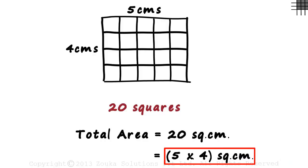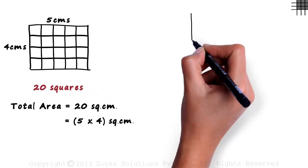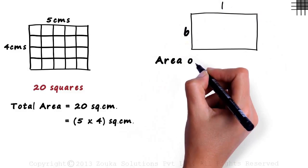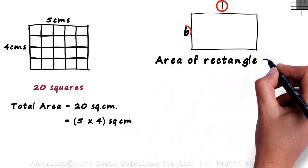That's how we get the formula of the area of a rectangle as length multiplied by breadth. We break the rectangle down to tiny squares of standard size. So if we have a rectangle of length L and breadth B, the area of the rectangle will be L multiplied by B.